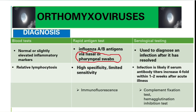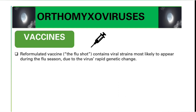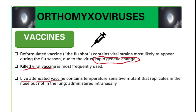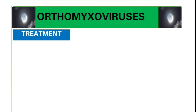For vaccines, there is a formulated vaccine — also known as the flu shot — which contains viral strains most likely to appear during the flu season. This is necessary due to rapid antigenic change. The most frequently used vaccine is the killed/inactivated viral vaccine. There is also a live attenuated vaccine containing temperature-sensitive mutants that replicate in the nose but not in the lungs, administered intranasally.